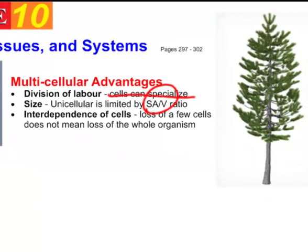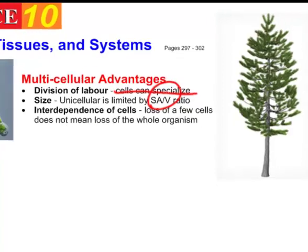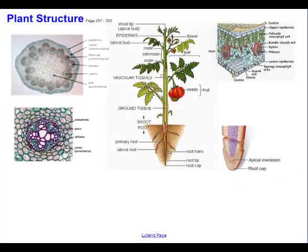If you're multicellular you can get to be quite huge, like a tree. There's also the idea of the interdependence of cells. If you're a multicellular organism and you lose a few cells or a few cells get damaged, that doesn't mean the entire organism dies - they can often be replaced. Of course, if you're single-celled, that would be the end of it.